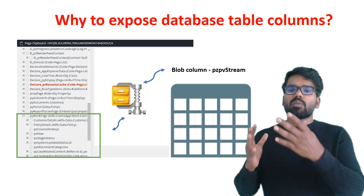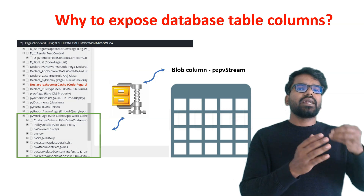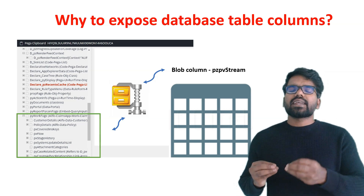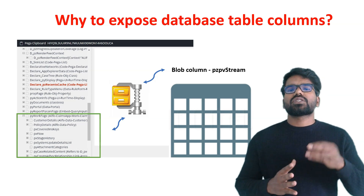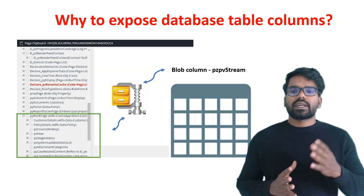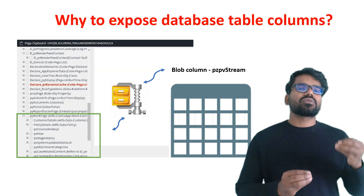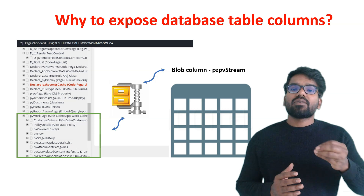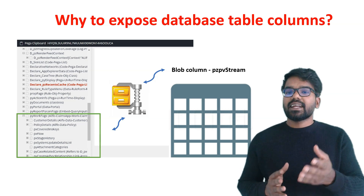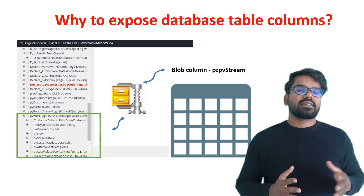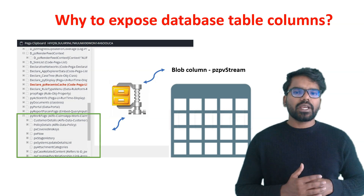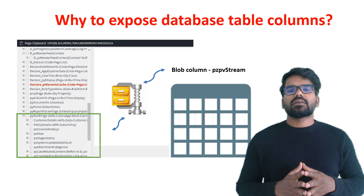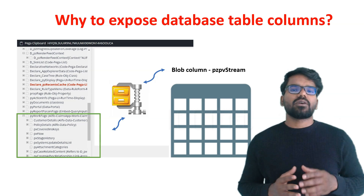When you want to access the data by opening the case, all these details can be decompressed and displayed to the end user. This compressing and decompressing uses Java PL functions — for example, PR read from stream, which helps to read data from the blob. Reading data from the blob is always expensive because of this compression and decompression. Especially when you use reporting and want to report on columns that are not exposed, it is going to be a huge performance issue.